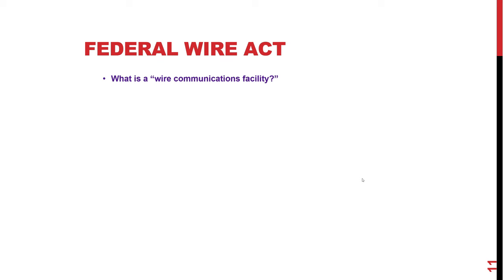The Wire Communication Facility is generally anything that can be or is regulated by the FCC. That includes internet traffic, telephones, cellular phones, and computer communications. Even if it's a wireless communication, at some point wires are involved either in the device or in the transmission somewhere, and that's been deemed sufficient under the Wire Act.